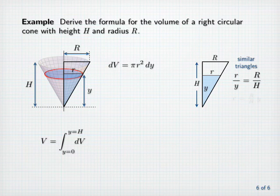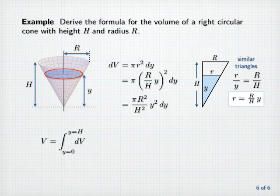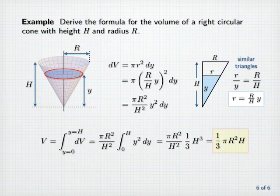Multiplying by y, we have little r equals capital R over capital H times y. Putting that into our formula for dV, we have pi times big R over big H times y, quantity squared, times dy. This is the same as pi times big R squared over big H squared times y squared dy. Now the volume is pi times big R squared over big H squared times the integral from zero to H of y squared dy. The antiderivative for y squared is one-third y cubed. When we evaluate that from zero to H, we get one-third H cubed, and simplifying we arrive at the familiar formula one-third pi R squared H. It's exactly one-third the volume of a right circular cylinder with the same dimensions.